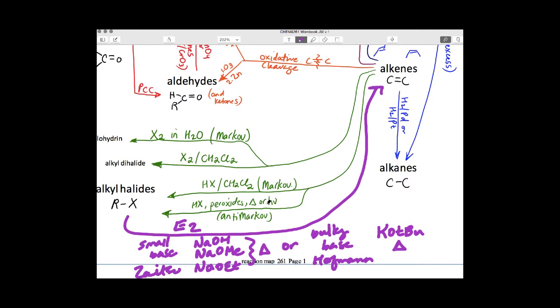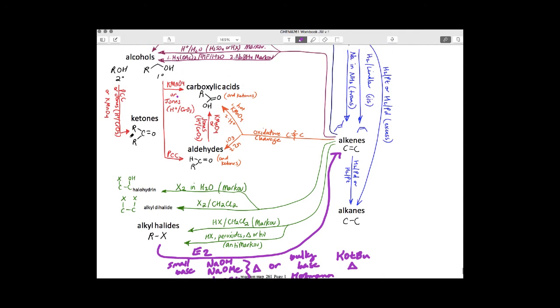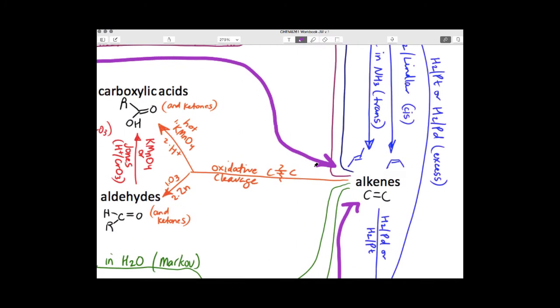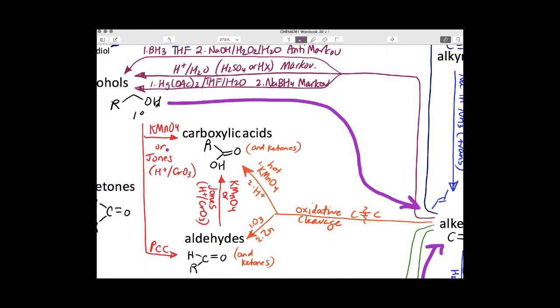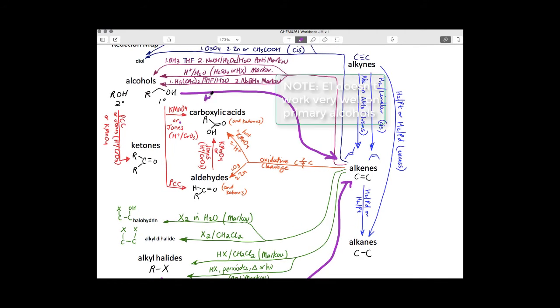We also learned how to do an E1 reaction with alcohols. Here are my alcohols. To convert these into good leaving groups using acid and heat, I need to protonate the OH group using concentrated sulfuric acid or any source of hydronium ion and heat. So this is an E1 reaction here, helping us go both forward and back.